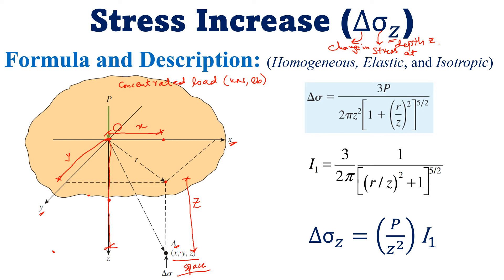One thing that must be known is the depth of the point at which we are going to calculate the stress. If x and y are not given, we consider that the point lies exactly below the concentrated or point load along the z-axis, so x will be zero and y will be zero in that case. Now we consider that all coordinates of point A exist — we have x, y, and z.